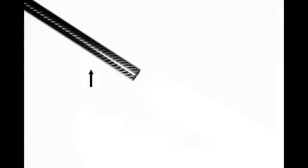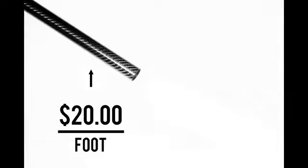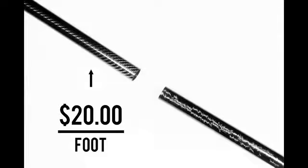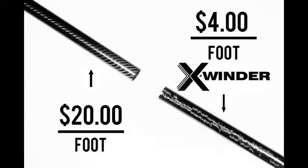This commercial 1 inch diameter carbon fiber tube costs about $20 per foot. This 1 inch diameter carbon fiber tube costs about $4 per foot, made with the X-Winder.